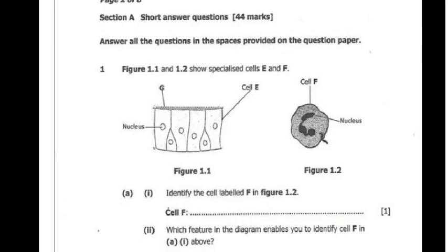figure 1.1 and 1.2 show specialized cell E and F. So we have figure 1.1 here with cell E, and then figure 1.2 with cell F. Don't get it twisted.